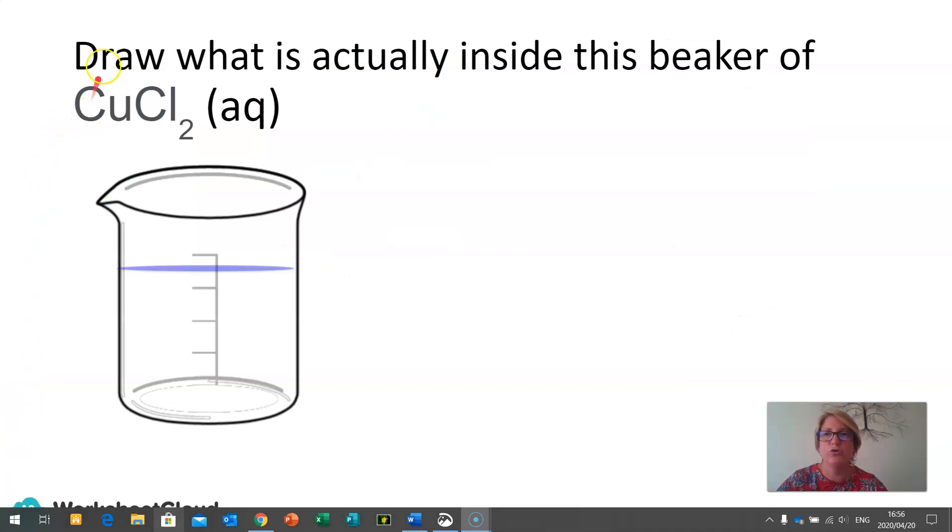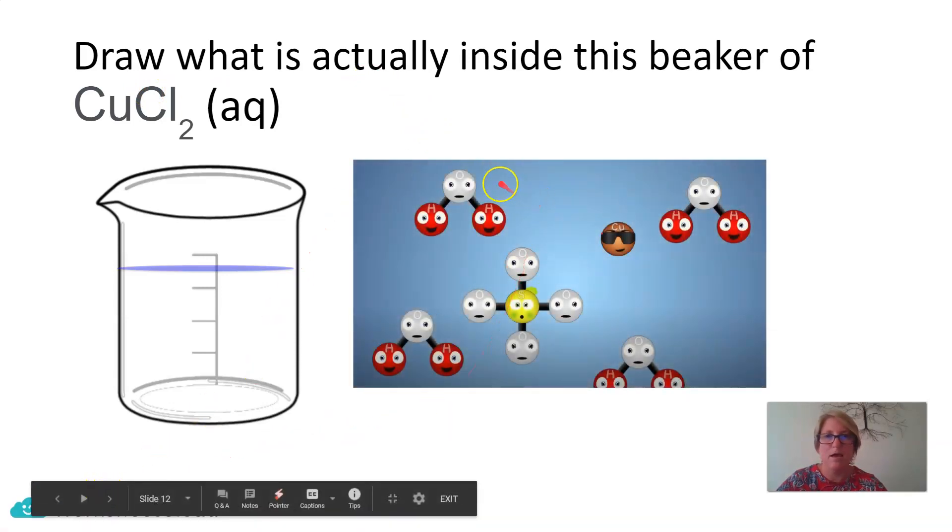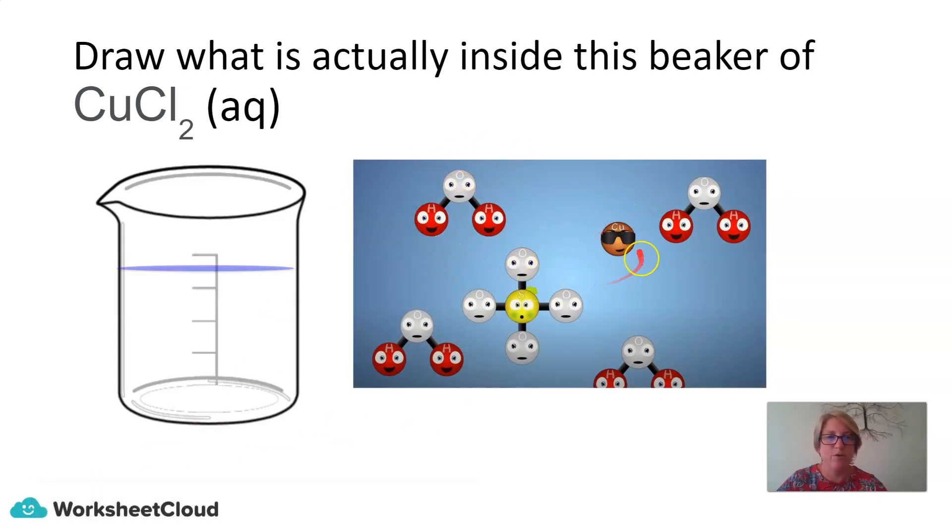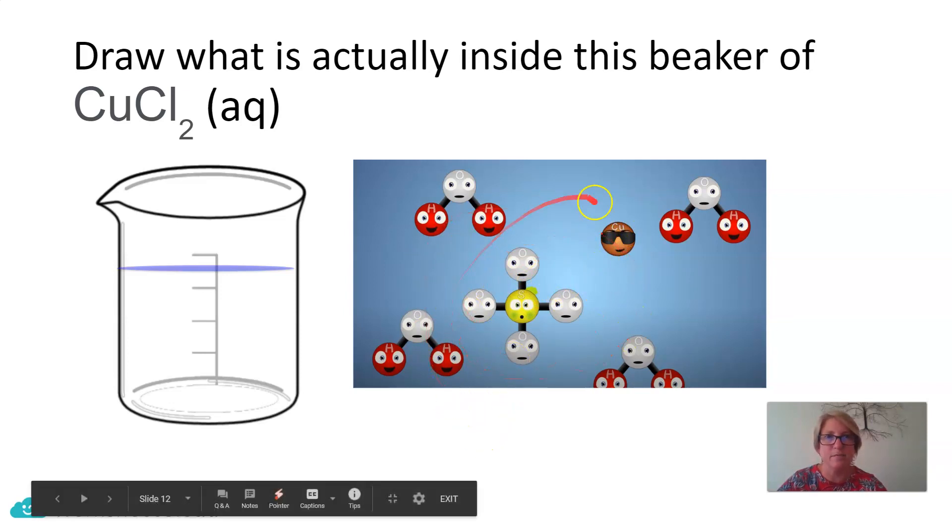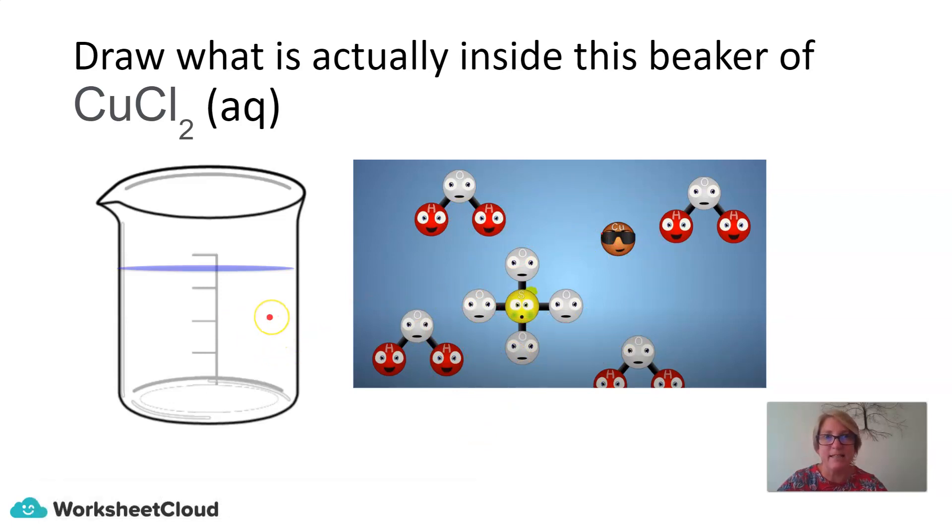I also asked you to draw what is actually inside the beaker of copper sulfate solution. And you will find that we have water and we will have copper that will be chemically combined with sulfate. So those are the atoms that we will find inside the compounds inside the beaker.